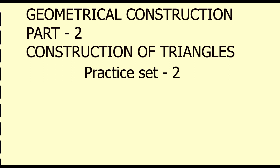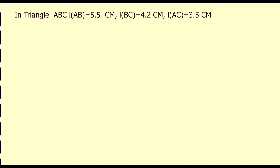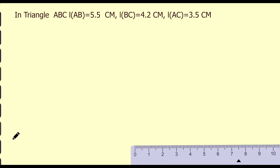Our first question is: draw triangles with the measures given below. In triangle ABC, length AB is 5.5 cm, length BC is 4.2 cm, and length AC is 3.5 cm.